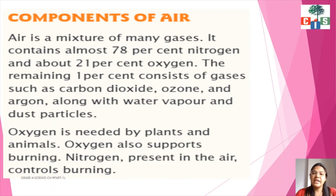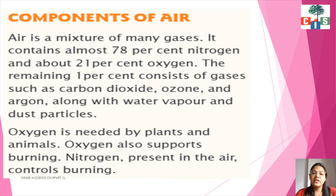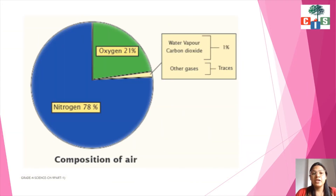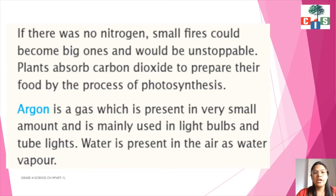Oxygen is needed by plants and animals. Oxygen also supports burning. Nitrogen present in the air controls burning. These different gases have different uses — like oxygen, which we breathe in, is important for all plants and animals. In the same way, nitrogen is also important: it controls burning. As you can see in this diagram, 78% of the air consists of nitrogen, 21% consists of oxygen, and 1% is the remaining gases.